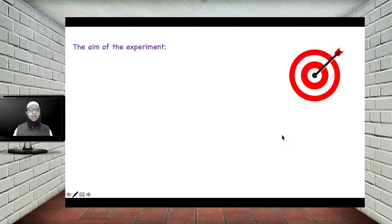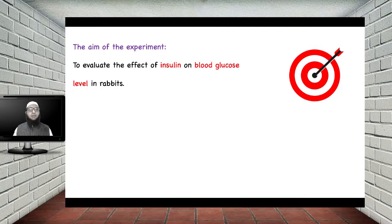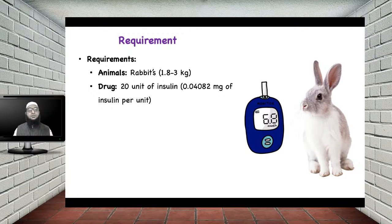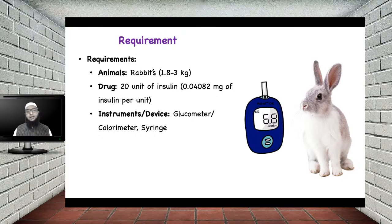The aim of today's experiment is to evaluate the effect of insulin on blood glucose level in the rabbit. The requirements are: the animal — rabbit with body weight of 1.8 to 3 kg; the drug — 20 units of insulin where one unit contains 0.04082 milligrams of insulin per unit; the instrument — a glucometer, or if not available a colorimeter; and a syringe to inject insulin and also to withdraw blood.